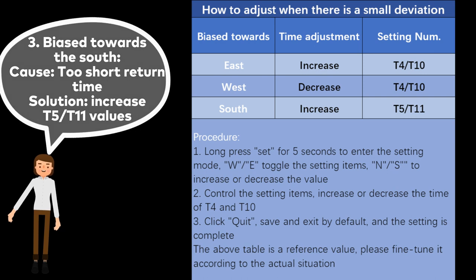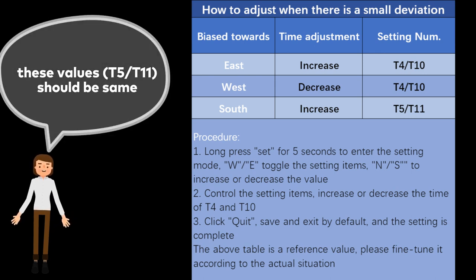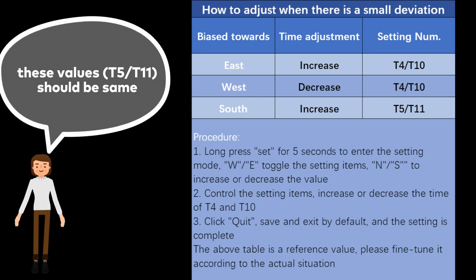3. Bias towards the south, cause: too short return time, solution: increase T5/T11 values. These values, T5/T11, should be same.